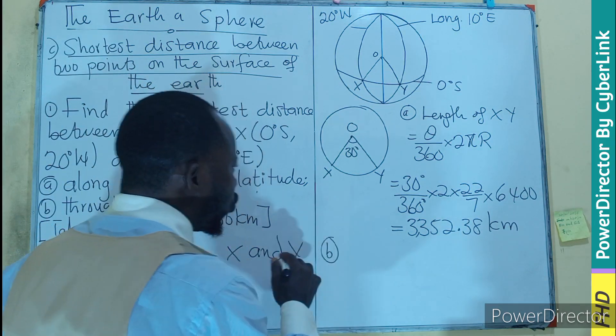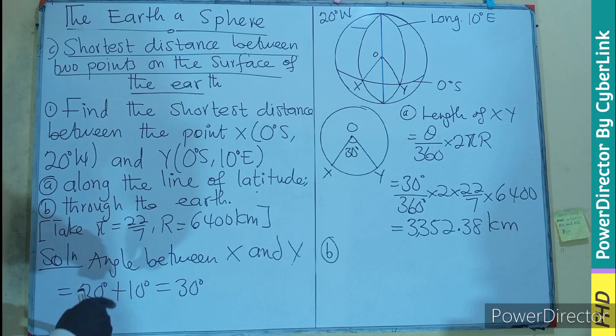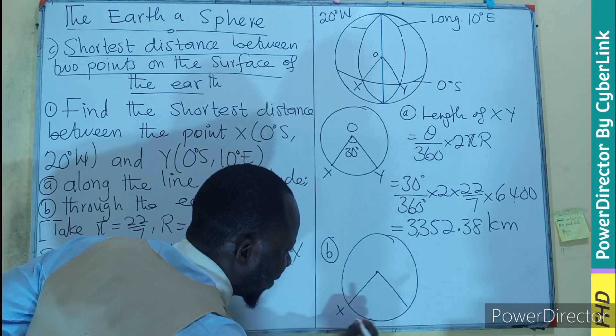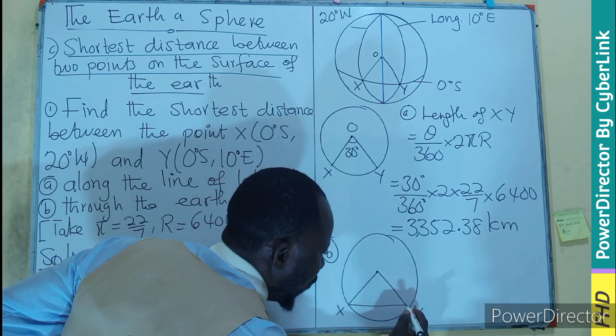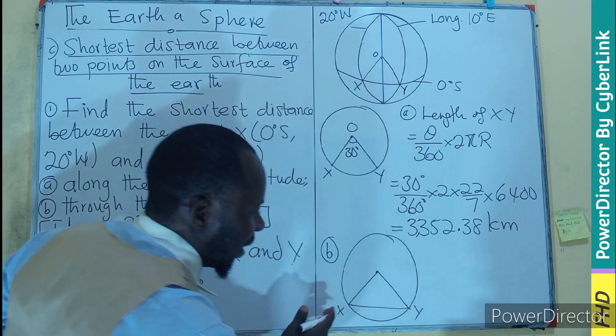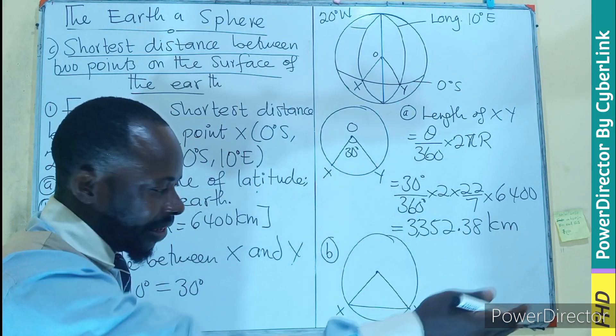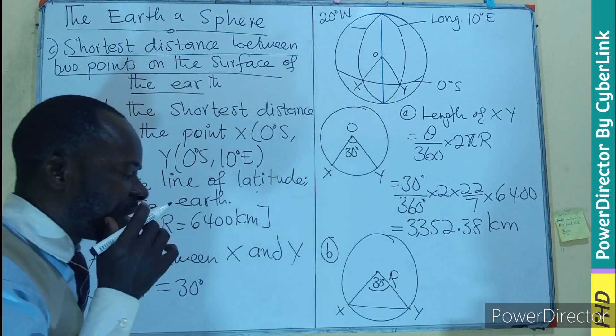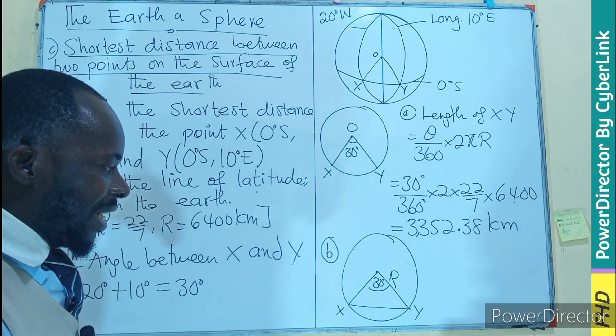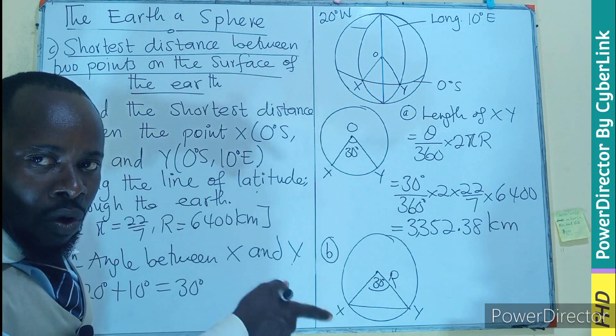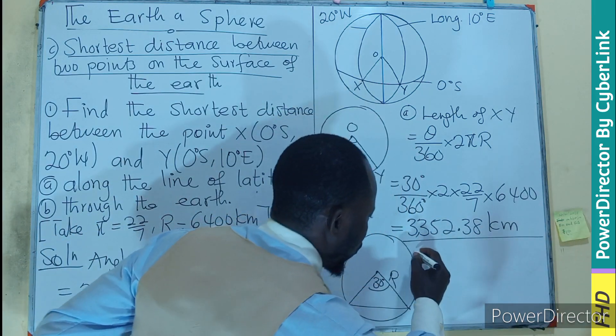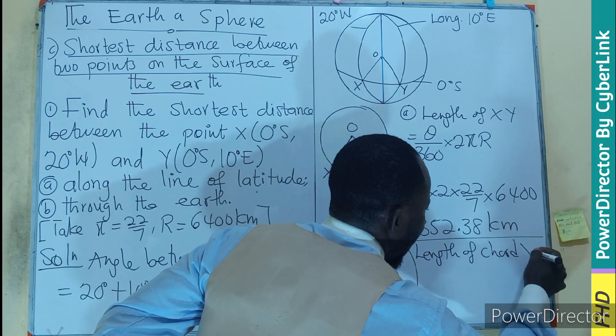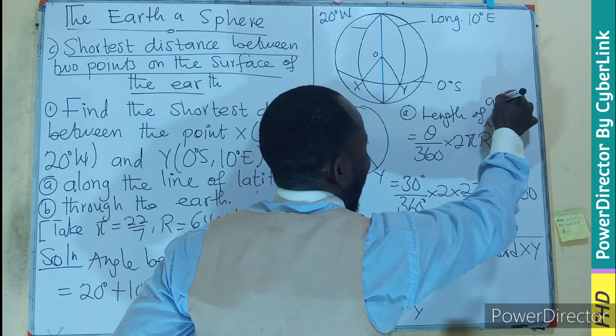Then for part B, we are to find it through the Earth. Meaning, if I have the circle here, our X is here, our Y is here, we are moving through the direct distance, the shorter distance. So don't forget, the angle remains 30 degrees. The radius is there. So you are looking for the distance. So here, the distance here is going to be the chord. So the length of chord XY.